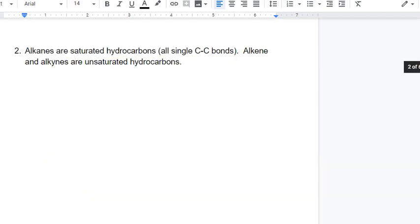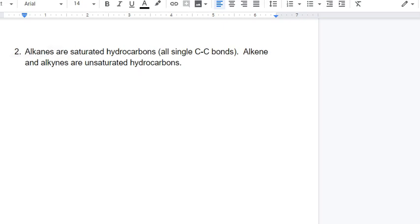Here's a fact that you need to know when it comes to organic molecules. Your alkanes are considered saturated hydrocarbons, meaning you have all single carbon-carbon bonds. Your alkenes and your alkynes are known as unsaturated hydrocarbons. Those double or triple bond carbon-carbon bonds between them can be opened up.